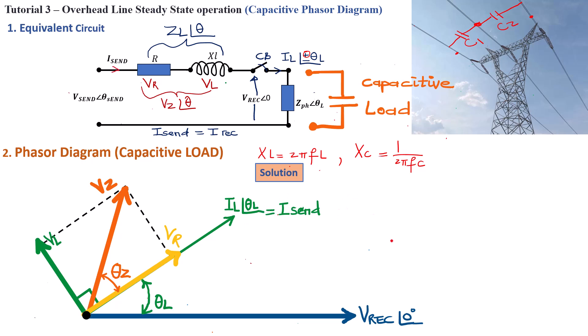But now, we are almost done with drawing our phasor diagram. The next thing we need to do is now to make a projection or to basically draw the sending end voltage because we've got the receiving end voltage, which is V-rec at the reference of zero degrees.